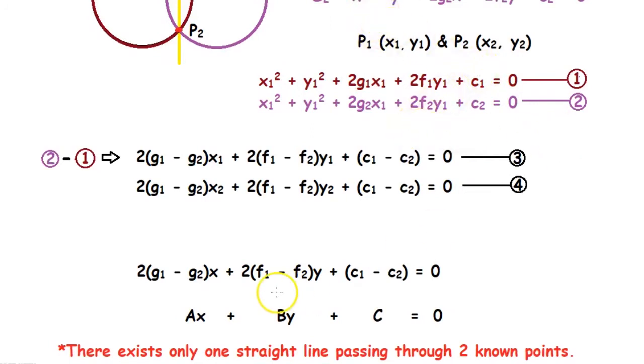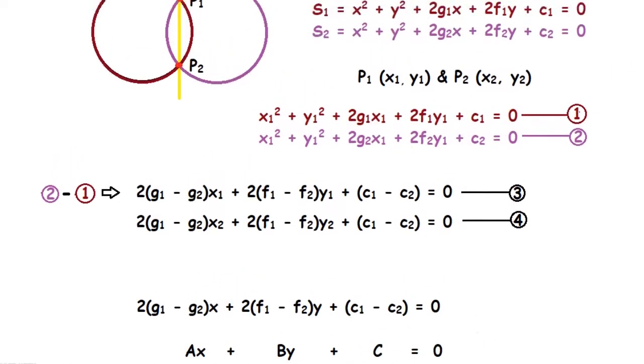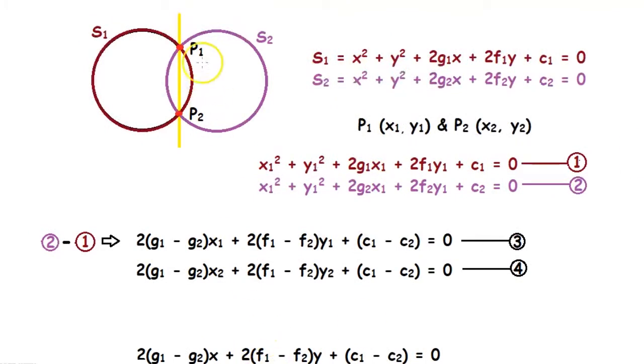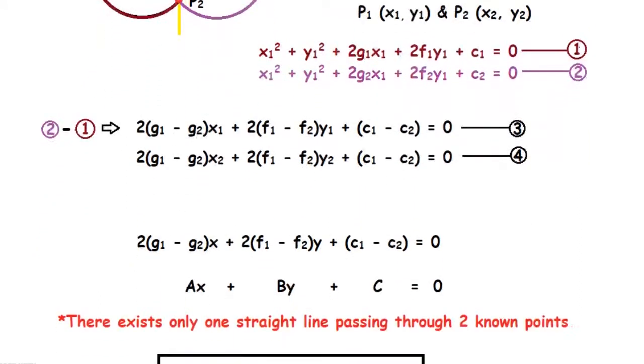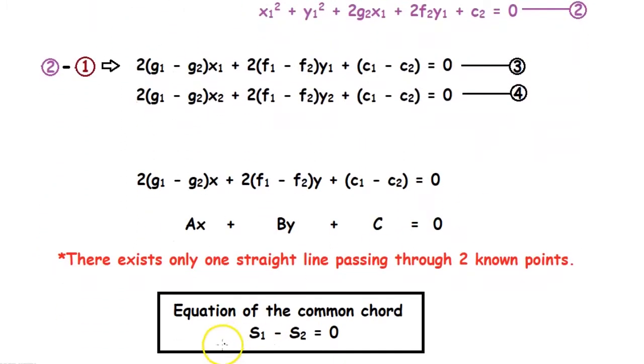Since there will exist only one straight line which passes through two known points, this is the equation of the common chord. Generally, the equation of the common chord is given as S1 - S2 = 0.